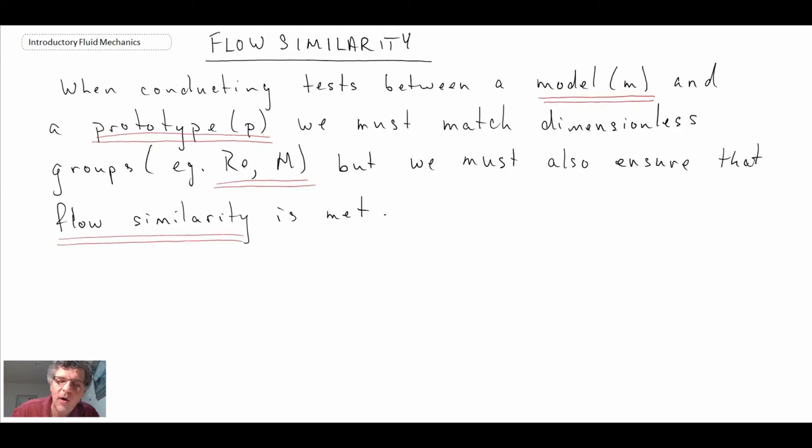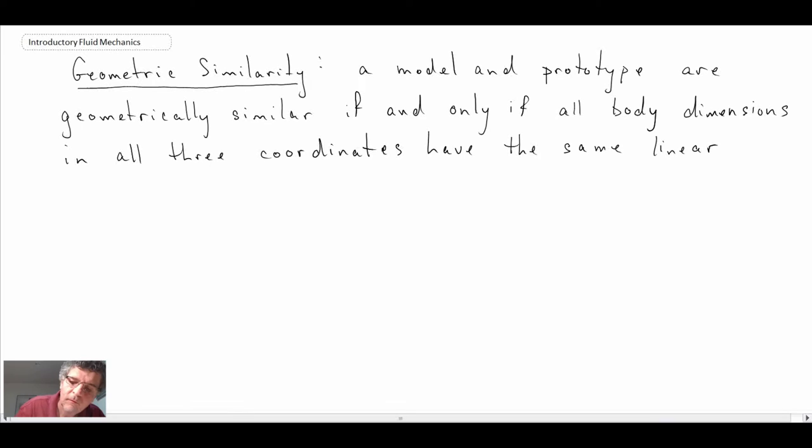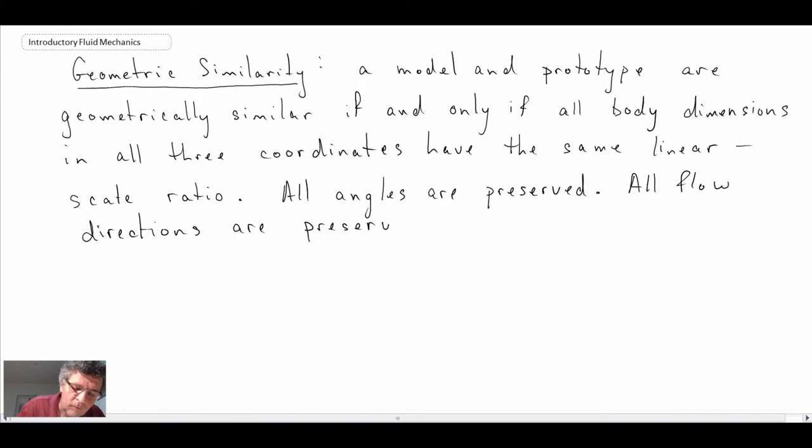The first one is the model and the prototype have to be the same sort of shape and dimensions. They have to scale with respect to one another—we call that geometric similarity. The body shapes need to be similar and they need to scale in all three coordinate dimensions. We have to have a linear scale ratio. All angles need to be preserved and all flow directions need to be preserved as well.